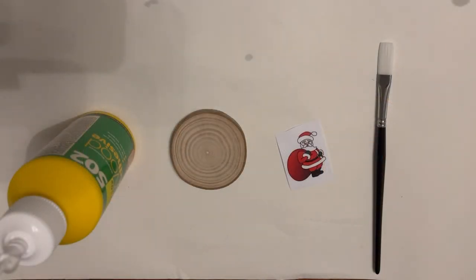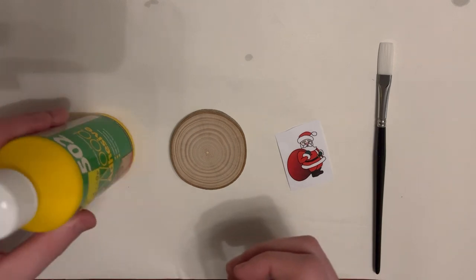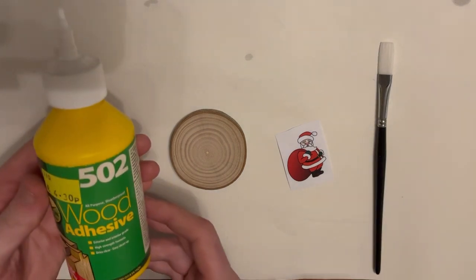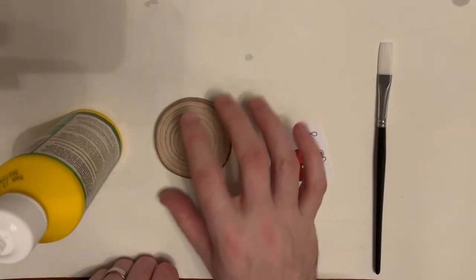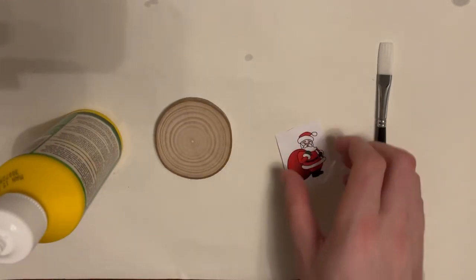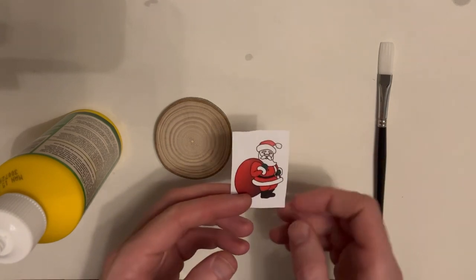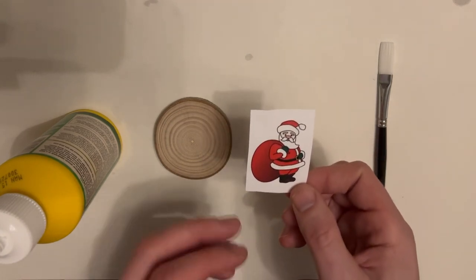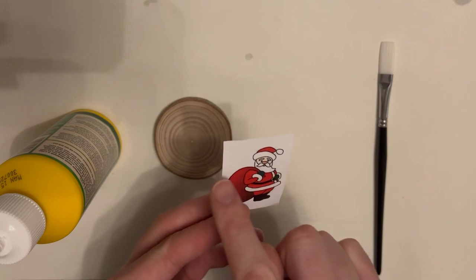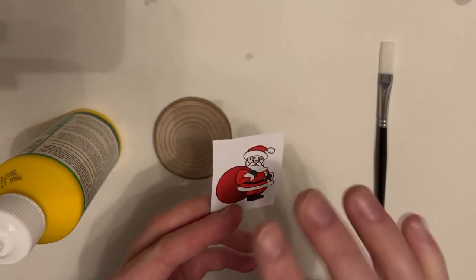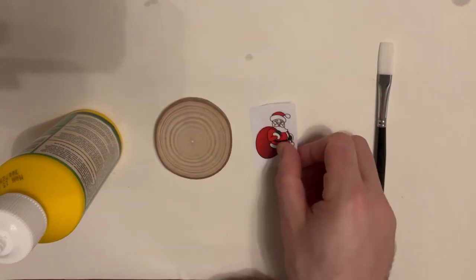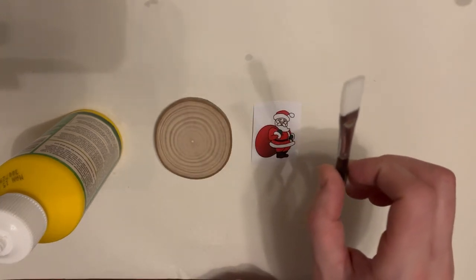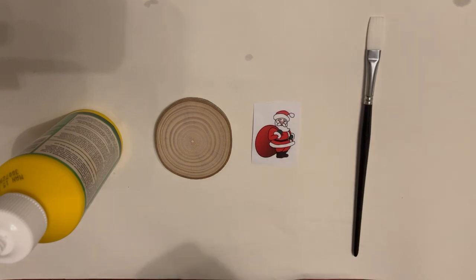Okay, so today we're going to look at doing a simple image transfer. To do this process, you need some standard PVA wood glue, a wood slice for our Christmas decoration, a printed out image, and a simple brush. I could have cut around the actual outline of the image, but I'm just going to leave it with a bit of extra paper there. We can remove that at a later date.